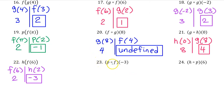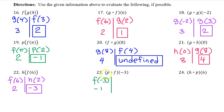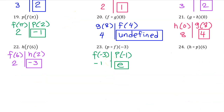Number 23. For the open circle notation we work from right to left. So we begin with F at negative 3. Here is the input value of negative 3, so F at negative 3 is negative 1. Moving to the left we do P at negative 1. P at negative 1 is E. So the answer is E.